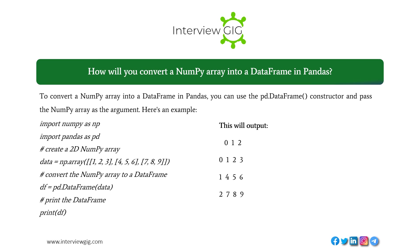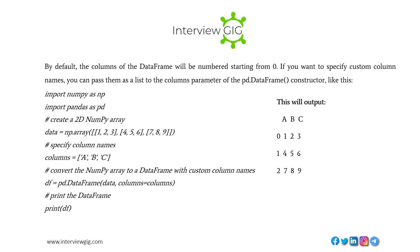To convert a NumPy array into a DataFrame in pandas, you can use the pd.DataFrame() constructor and pass the NumPy array as the argument. By default, the columns of the DataFrame will be numbered starting from 0. If you want to specify custom column names, pass them as a list to the columns parameter. For example: import numpy as np, import pandas as pd, data = np.array([[1,2,3],[4,5,6],[7,8,9]]), columns = ['a','b','c'], df = pd.DataFrame(data, columns=columns), print(df).